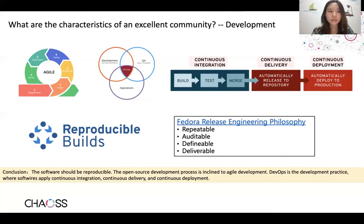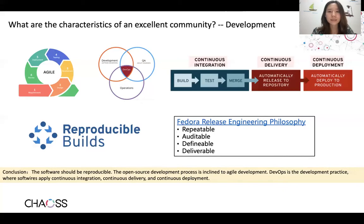Reproducible Builds is part of the chain of trust by promising that identical results are always generated from a given source — you can always produce exactly the same binary code. It allows verification that no vulnerabilities are introduced into the components. Open source component security is a critical topic during development. It also relates to the process of releasing and delivery. For example, the release engineering philosophy of Fedora is repeatable, auditable, definable, and deliverable.